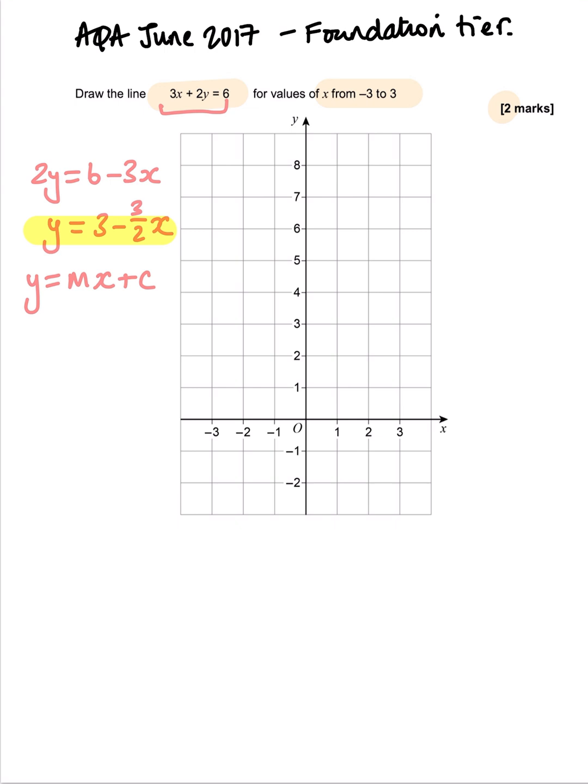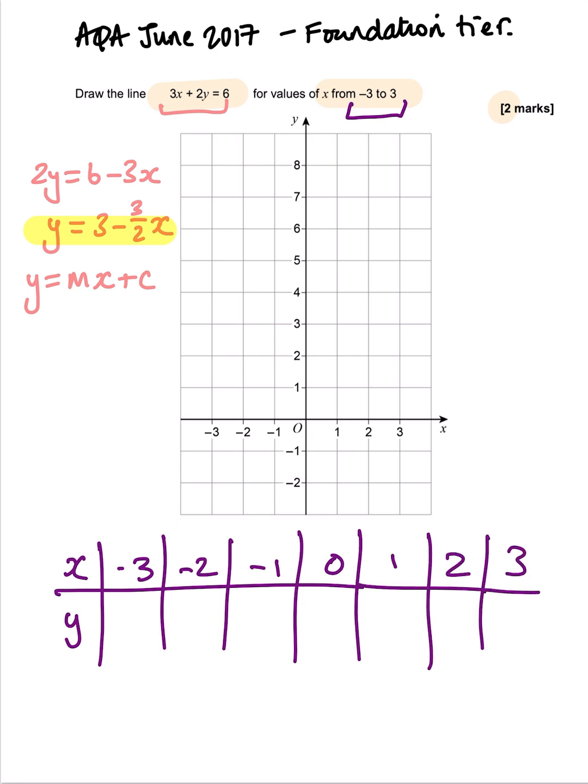So I'm going to draw myself a little table down here. So this is x and y, and we're using the x values from minus 3 to 3. So minus 3, minus 2, minus 1, 0, 1, 2, and 3.